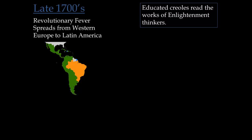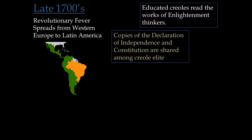The time period we're looking at is the late 1700s, from the same time as the American and French revolutions. Those ideas have spread from Western Europe to Latin America, to colonists and also natives to these areas. Educated Creoles begin reading the works of Enlightenment thinkers. Creoles are the natives to some of these areas, especially in the island of Haiti. Copies of the Declaration of Independence and the Constitution are being shared among the Creole elite.